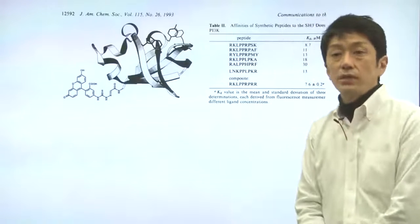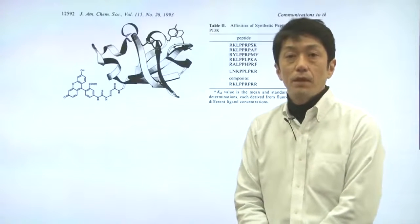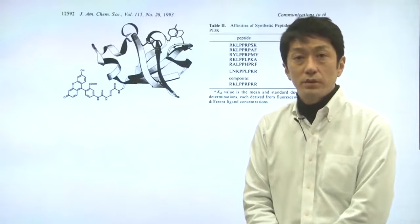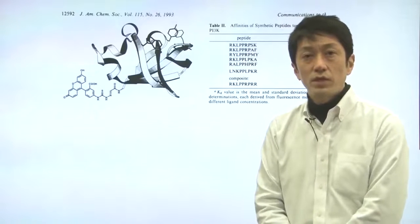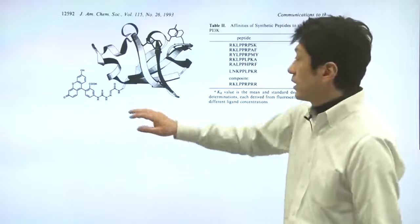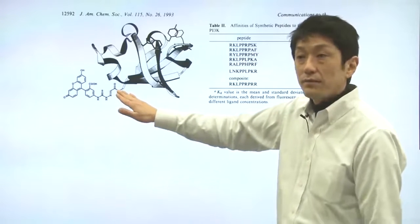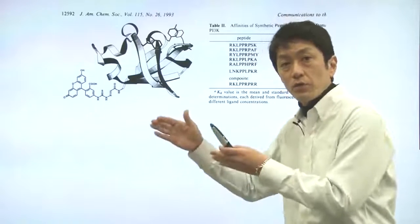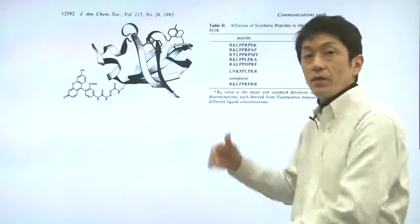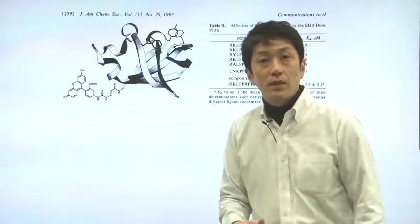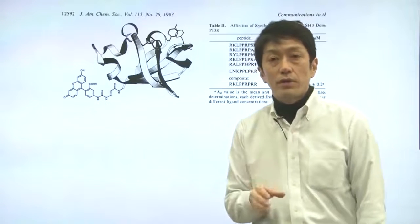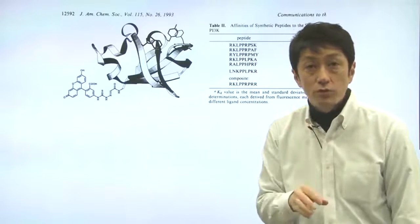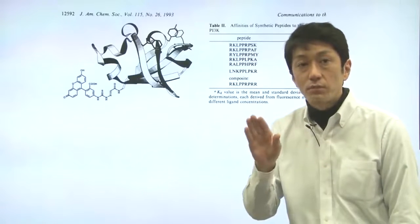To identify the peptide, he labeled the SH3 domain with a fluorescent molecule and added to the labeled protein, to the library of the peptide. He then looked at the library through a microscope to observe any fluorescent beads.